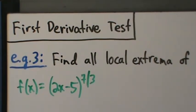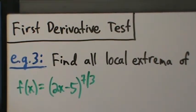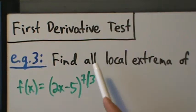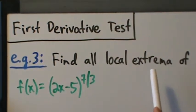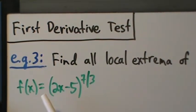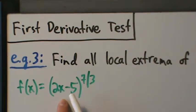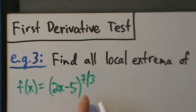Here's example 3 with the first derivative test. We're going to use the first derivative test to find all the local extrema of f(x) equals the quantity 2x minus 5 raised to the 7/3 power.